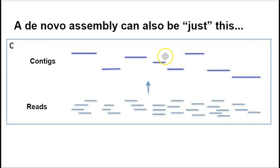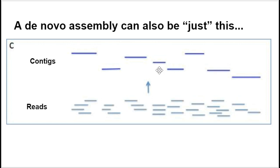Our goal is not to go all the way to the scaffold level, although our program will give us that, and we're definitely not going to finish these genomes or take them all the way back to the original chromosomes or plasmids. We're interested in going from reads to contigs because we should be able to mine enough comparative information from these isolates to compare them to what is known, to publish them, and to ask meaningful questions to interrogate those genomes.